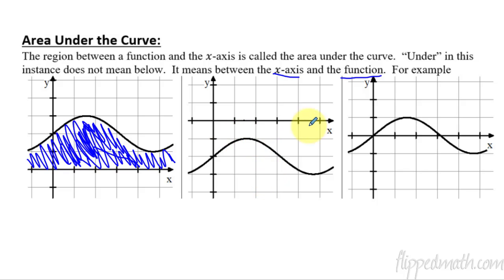So, on this example, the x-axis is above the curve, and so we would shade above it. So, this area would be considered area under the curve, even though it's actually not below the curve. In this case, it's above the curve. So, that's why you don't want to think under means below. It means between x-axis and the curve.